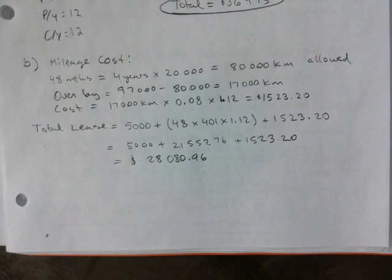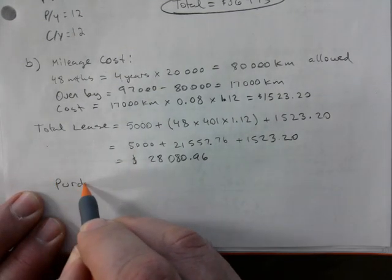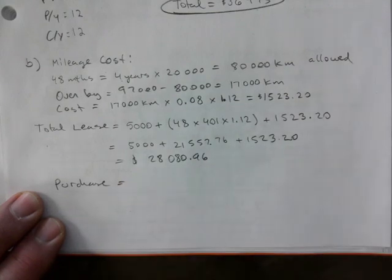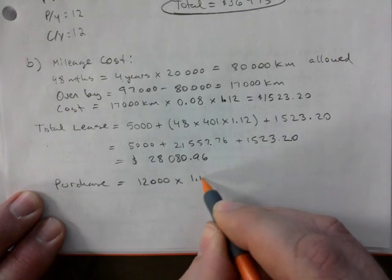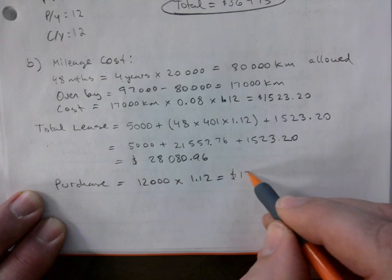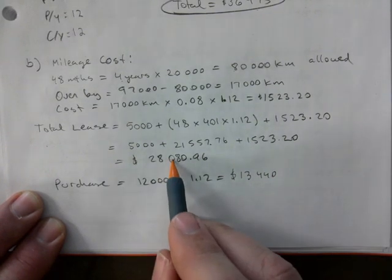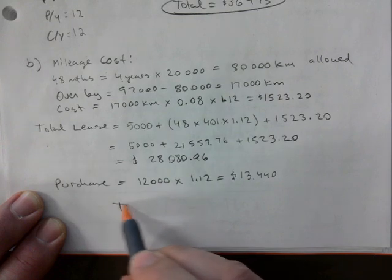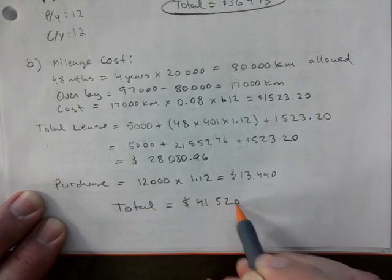That's just the lease, but you're going to buy it yet. Purchase - how much is it worth at the end? It says $12,000 plus taxes. And that gives us $13,440. So we add these two up to get our total. Total is $41,520.96.